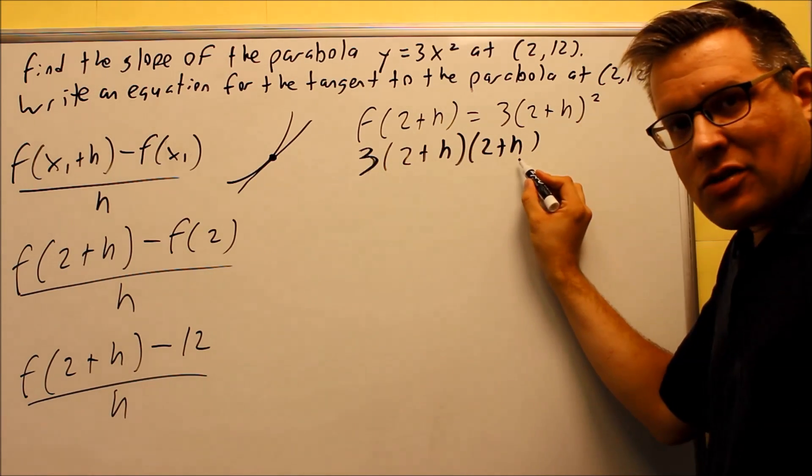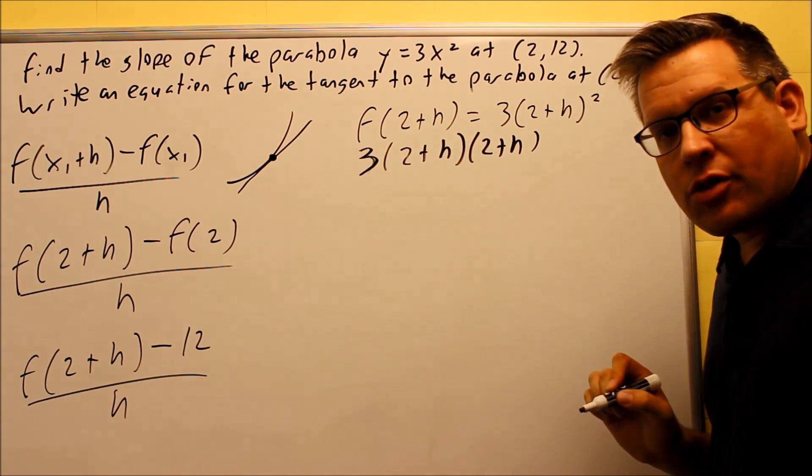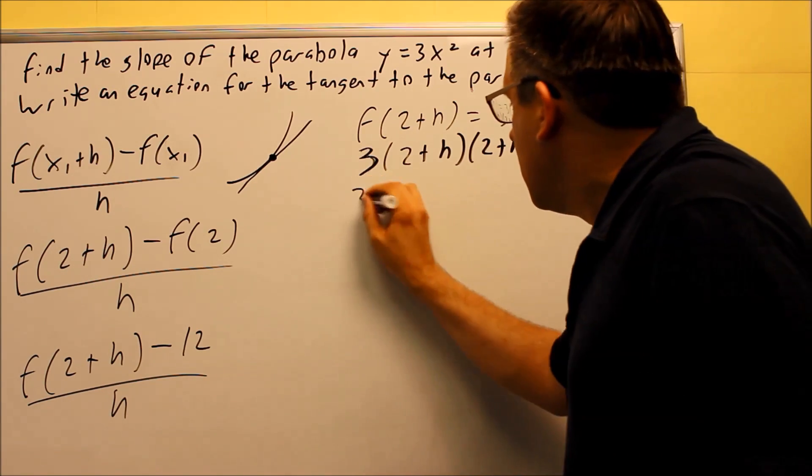So we're going to write it out like this. Then what I'm going to do is I'm going to multiply these two together first, and then I'll multiply it by 3. So we're going to do a FOIL method on these two.